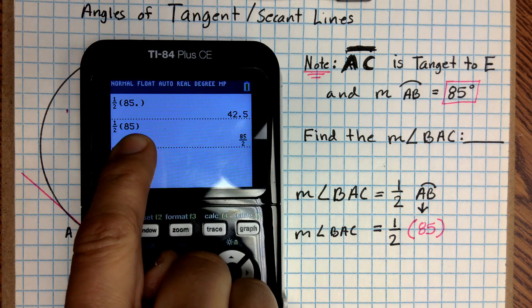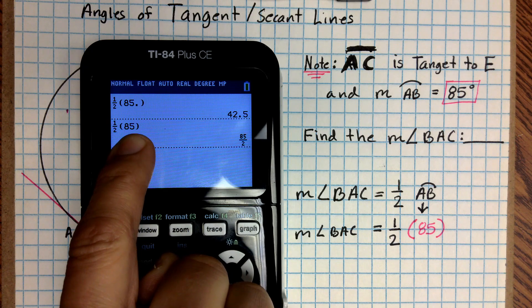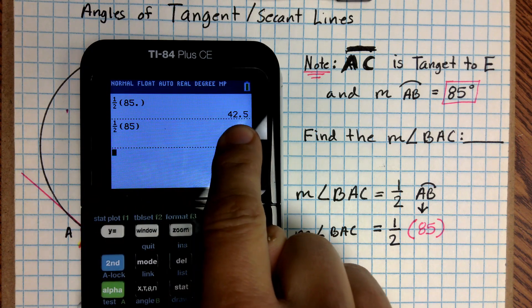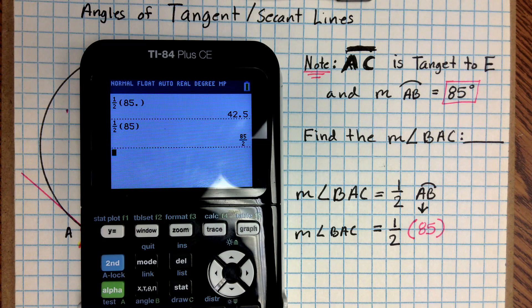But if you put a decimal after your whole number, the one that you're multiplying to, it will automatically convert it to a decimal for you. And so it's 42.5 degrees.